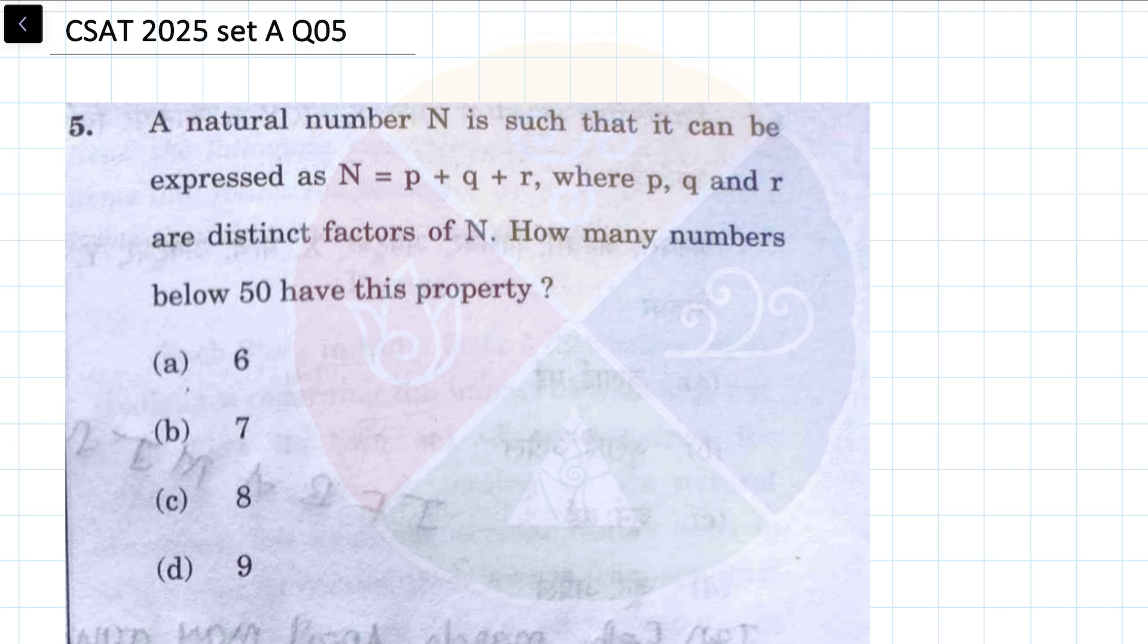I'm going to give you the answer. Let's read the question. There is a natural number N such that it can be expressed as N equals p plus q plus r. What are p, q, and r? p, q, and r are distinct factors of N. First of all they are factors of N, and on top of that they are different - they cannot be same, they cannot repeat. How many numbers below 50 have this property?